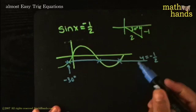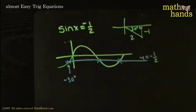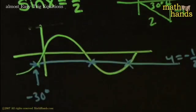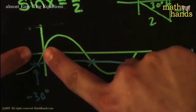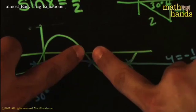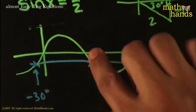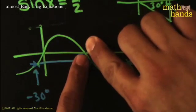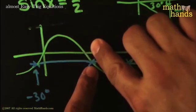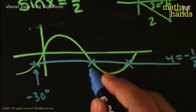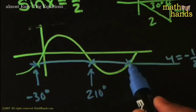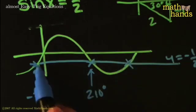And then using the symmetry of the graph, if this distance right here is 30 degrees, then so is this distance right here. That's also got to be 30 degrees. And I know this point right here, that point right there is 180. That's when sine comes back to zero. So I've got to go 180 plus 30 more. So that gives me this one right here. This is 210 degrees. And this one I can find because this one's 360 from this one.